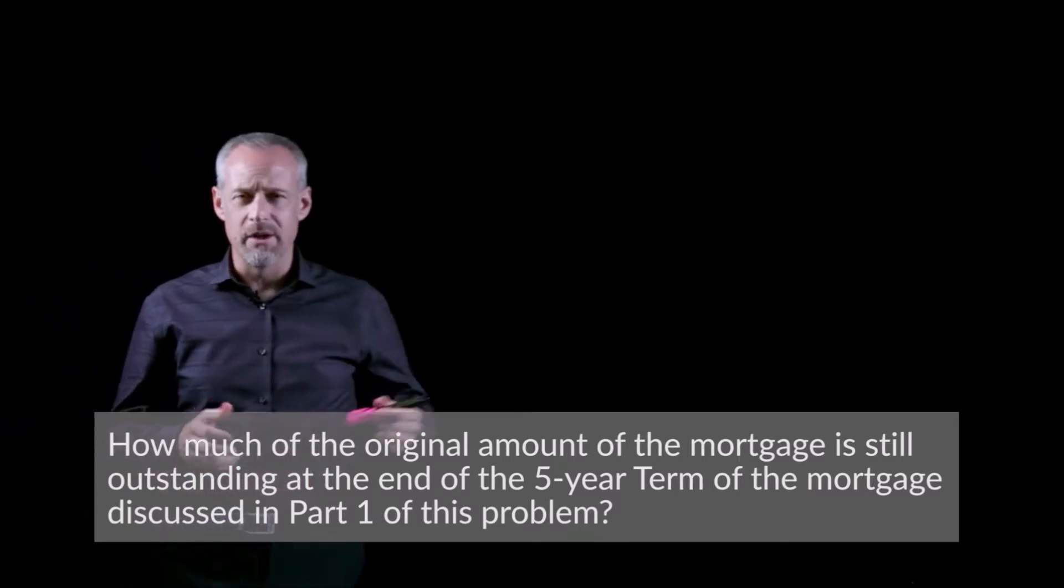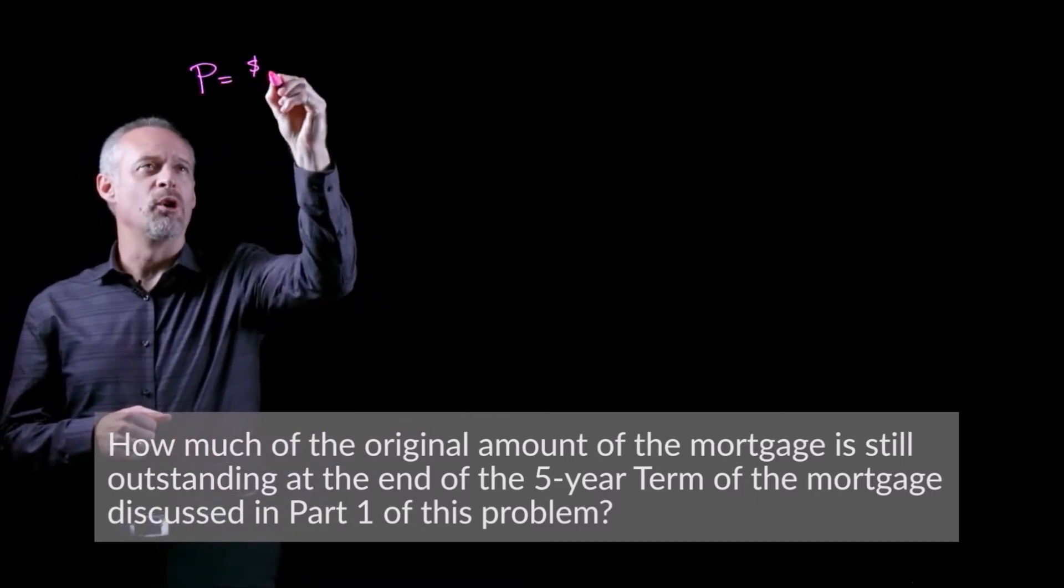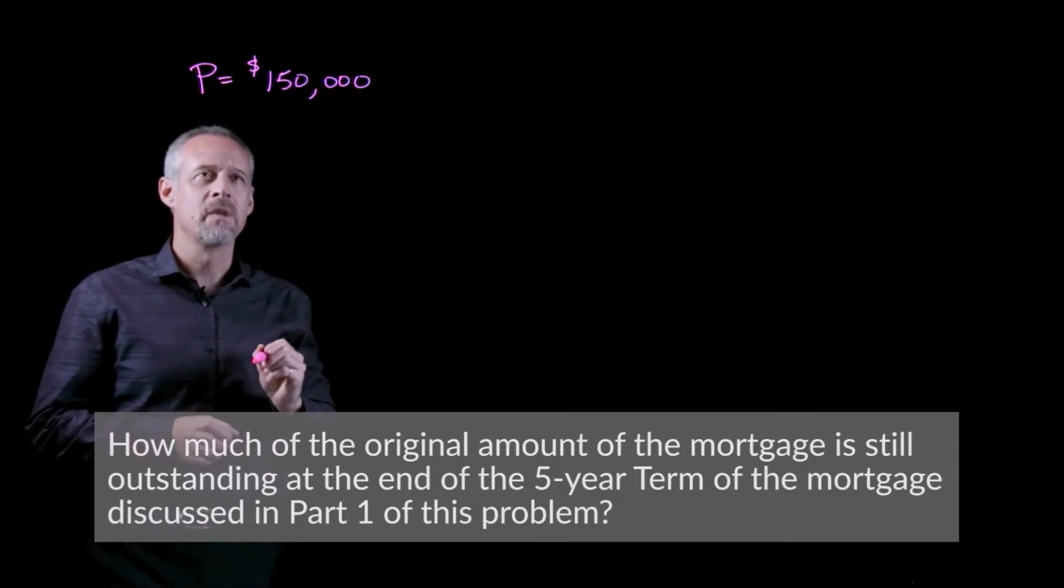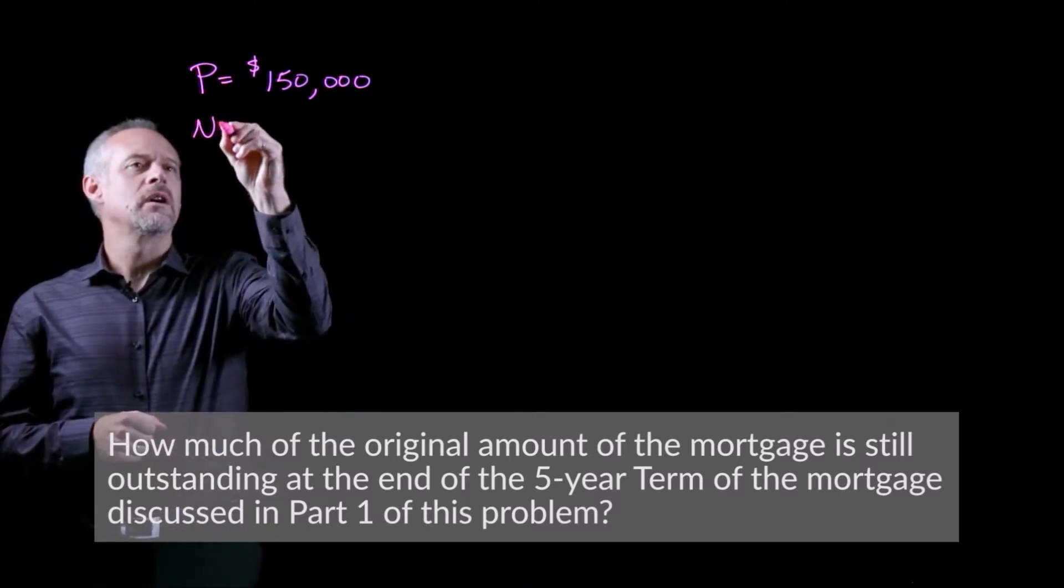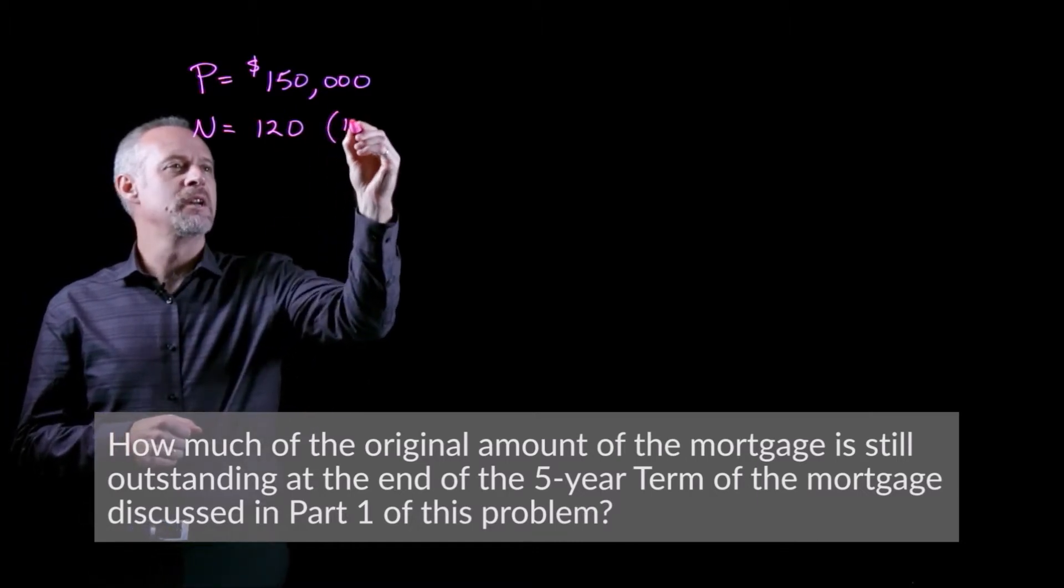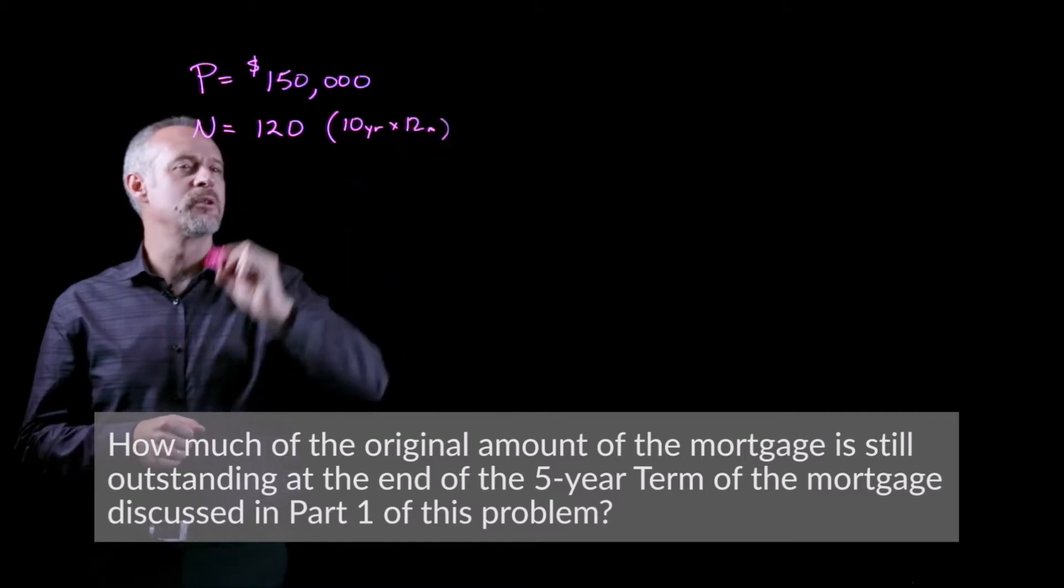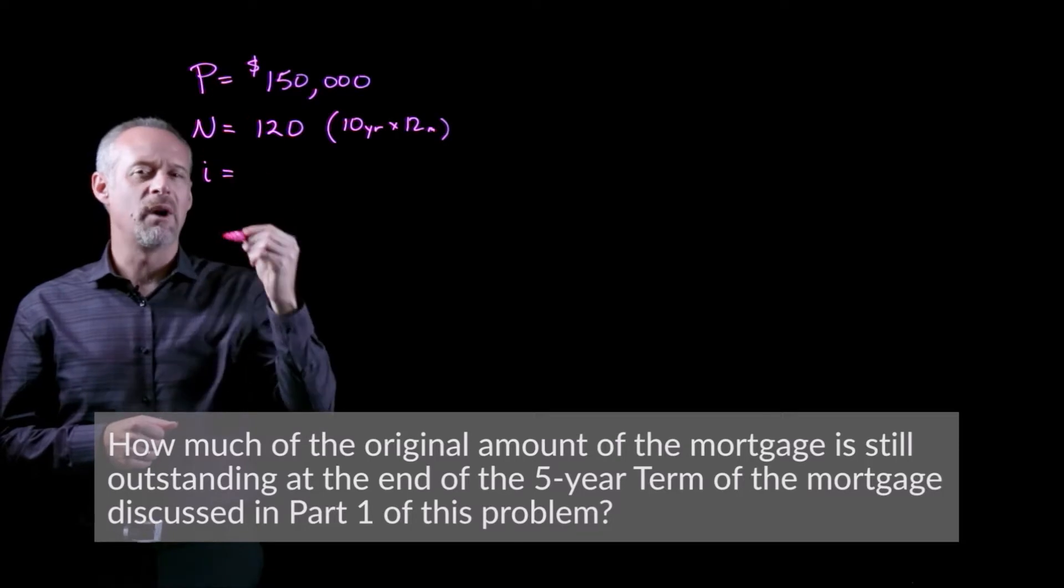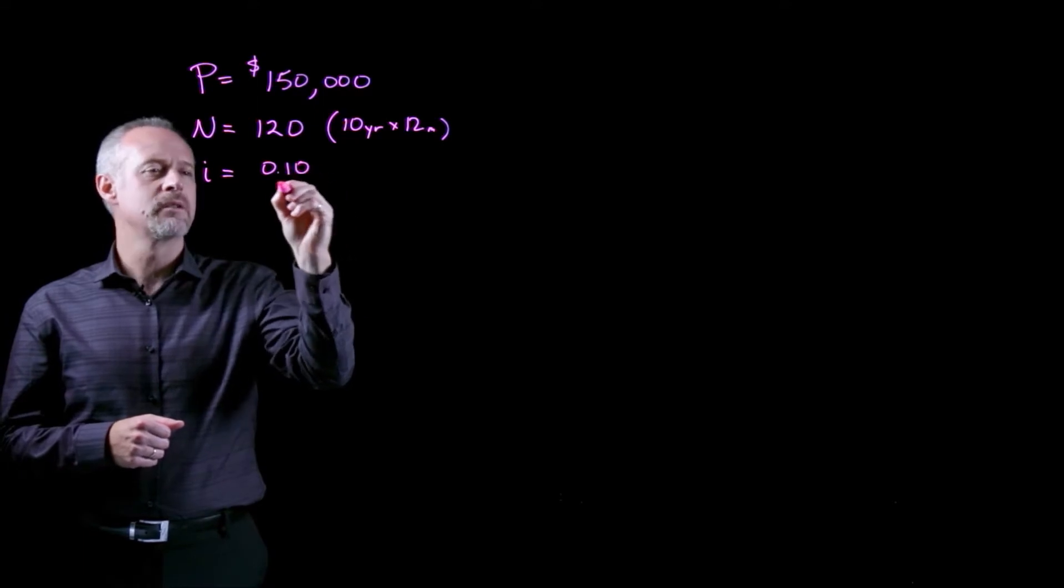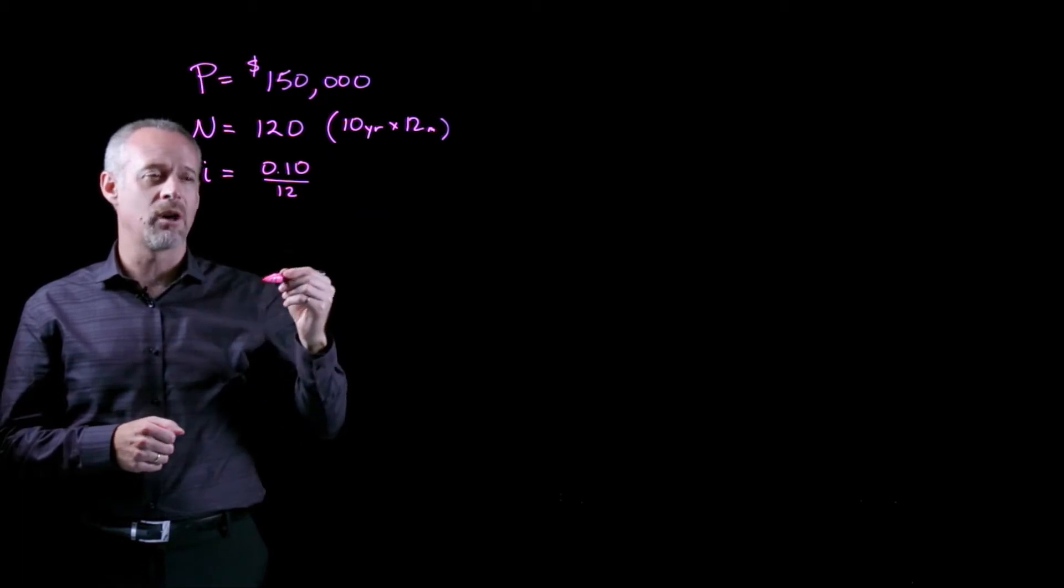Recall that in the first part of this problem, we had an original amount that was borrowed of $150,000. We were also given N, the number of months, equal to 120. This came from 10 years times 12 months per year. We also calculated the monthly interest rate from our 10% nominal rate divided by 12 compounding periods, because the rate was quoted as 10% compounded monthly, which gave us 0.833 repeating percent.